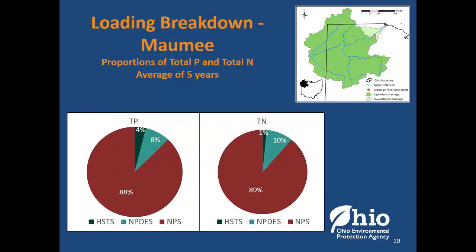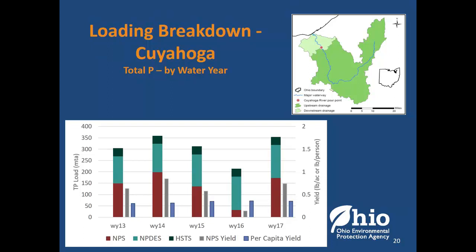This is the five-year average of total phosphorus and total nitrogen for the Maumee in pie chart form. Both the phosphorus and total nitrogen are basically 90% or very close to 90% non-point source. This pretty much makes sense — there's not a large population in the Maumee watershed, which means fewer point sources.